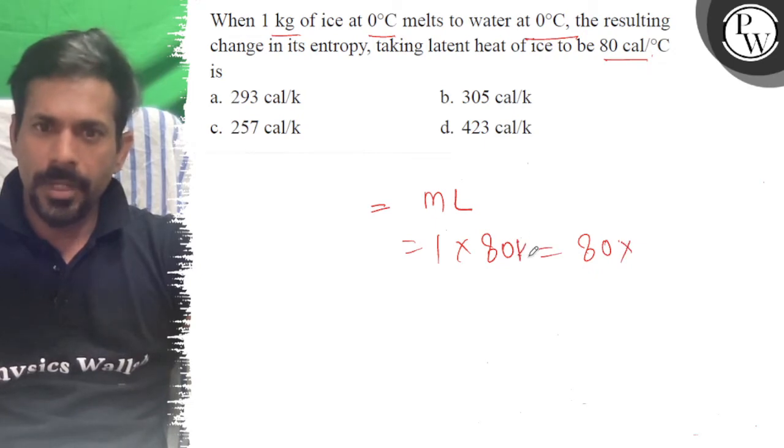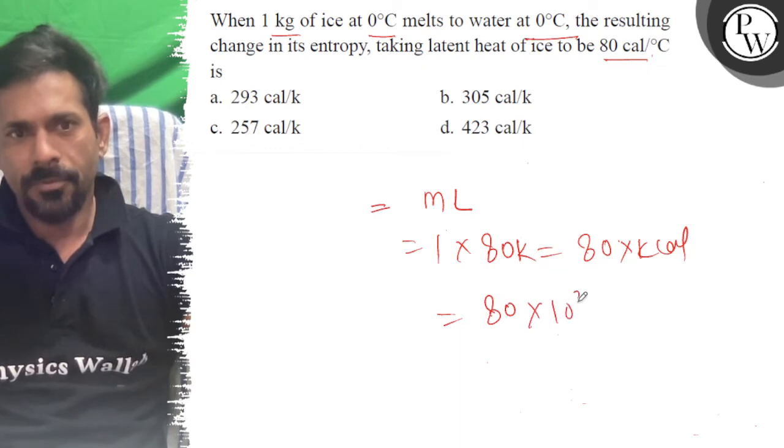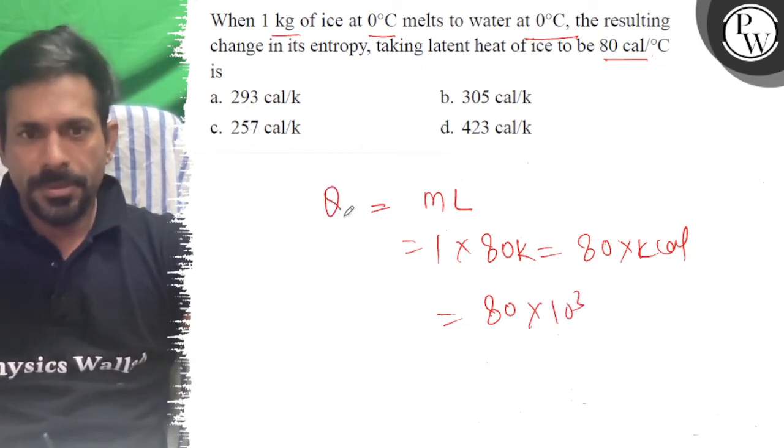So that will be 80 kilocalorie. This is 80 × 10³. This is your Q.